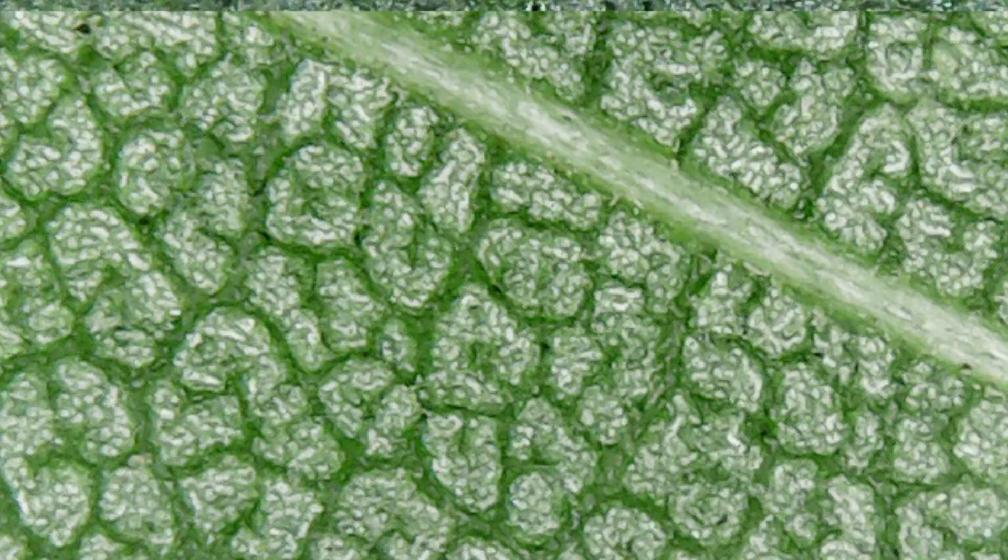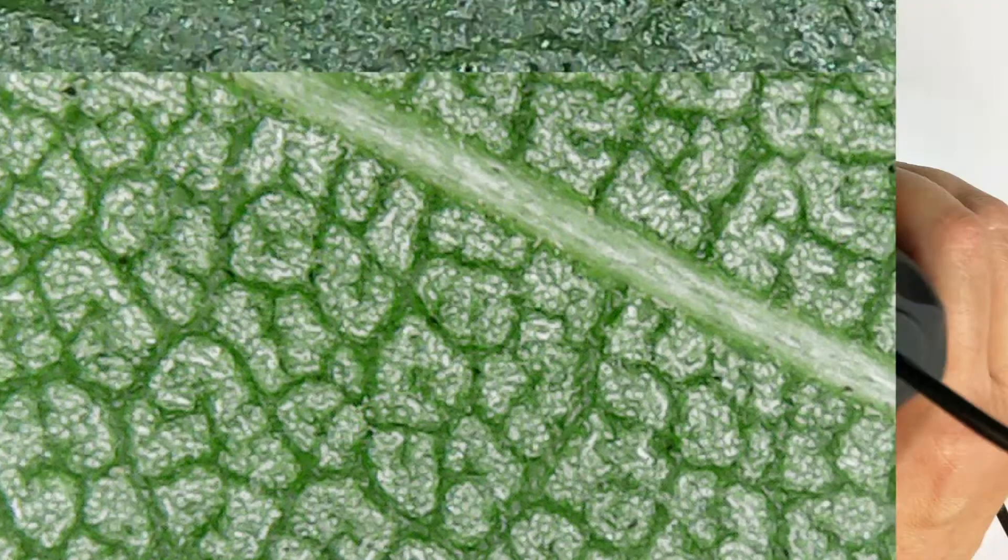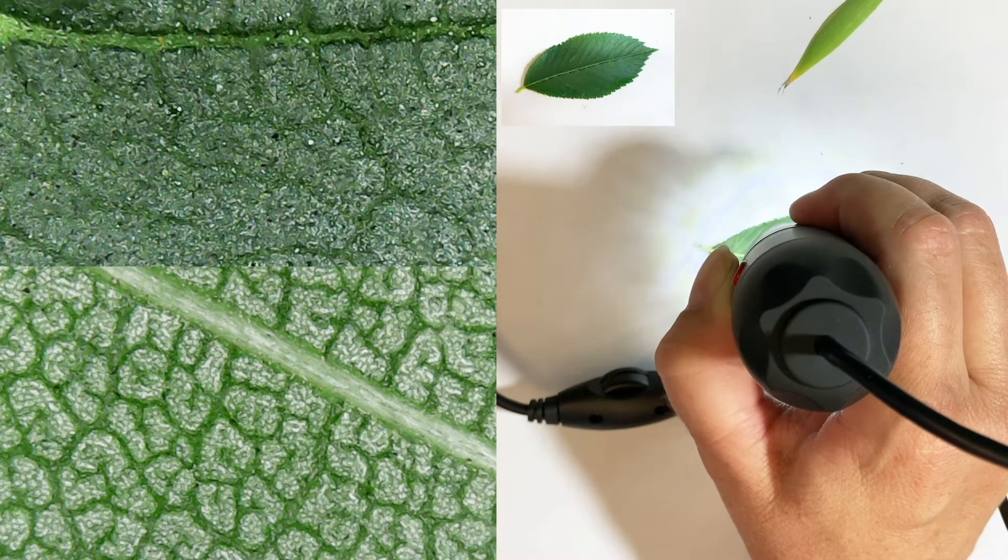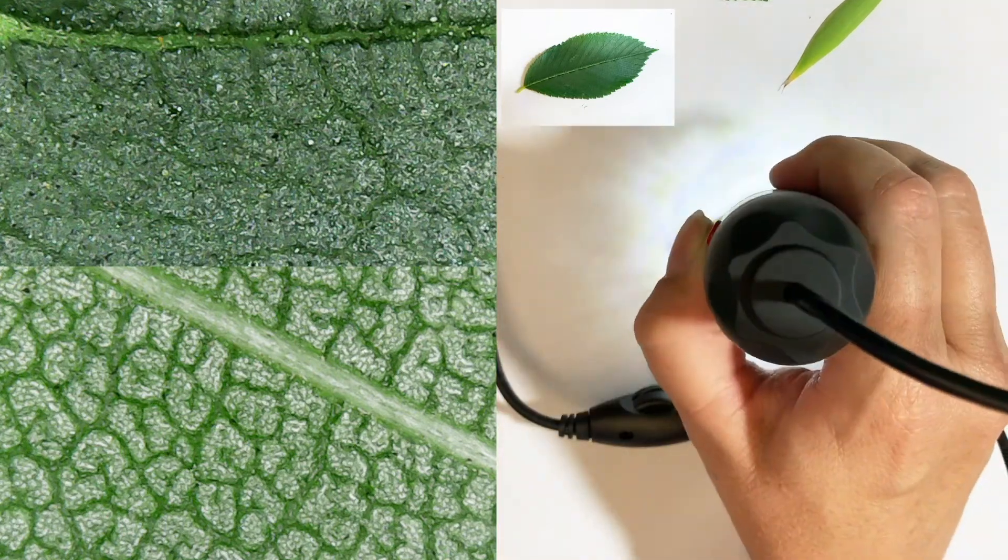And what's this? That's another leaf. Another leaf. It is another leaf. That's the back of the leaf. And that top part is the front of the leaf. Isn't that weird that it looks so different?